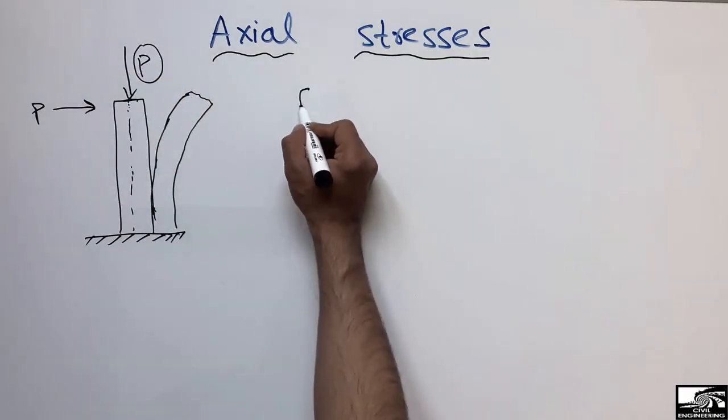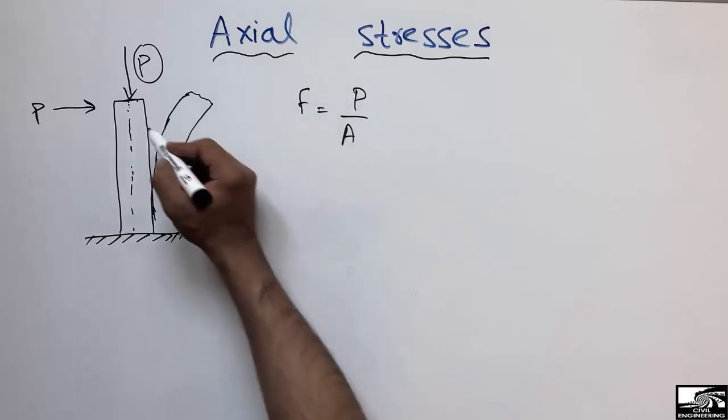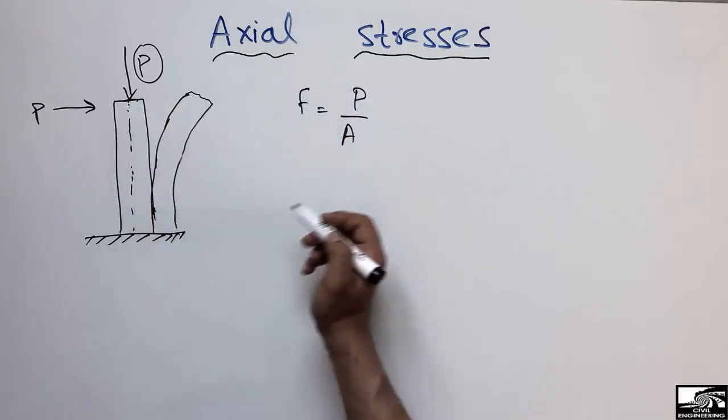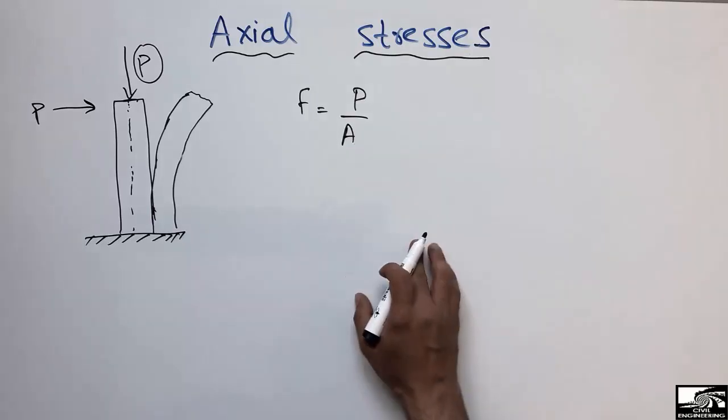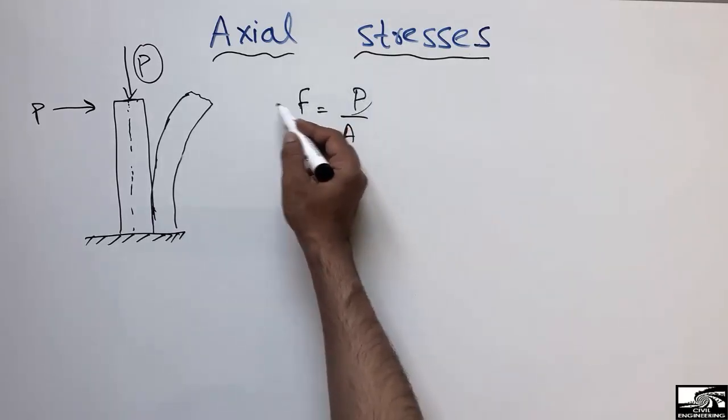So the axial stresses will be P over A, where A is the cross section of this column. It may be a rectangular column or a circular column. Dividing the load by area, we can get the axial stresses for this column.